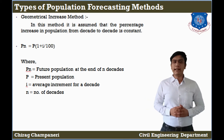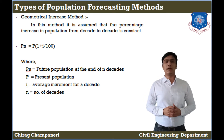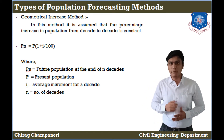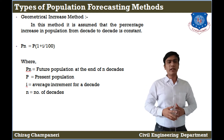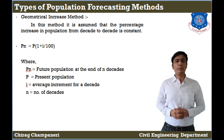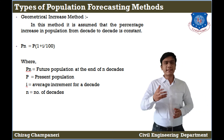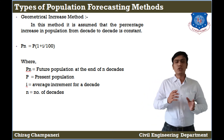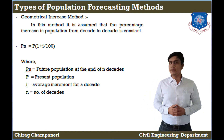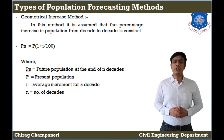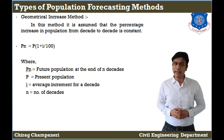Next is the Geometrical Increase Method. In this method, we assume a percentage of population growth and use it to find the future population. The equation is: Pn = P × (1 + I/100)^n. Here, Pn is the future population at the end of n decades, P is the present population, I is the average increment per decade, and N is the number of decades.